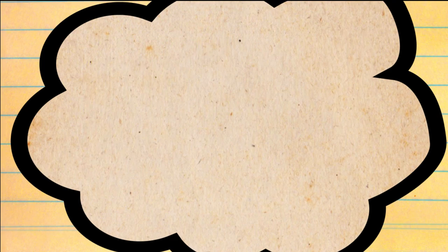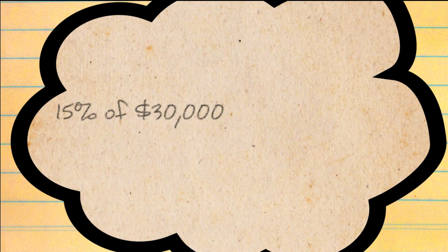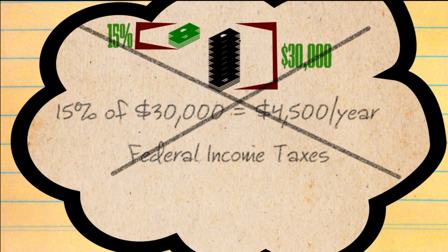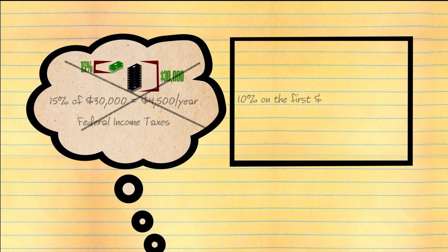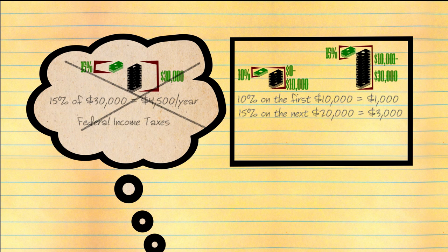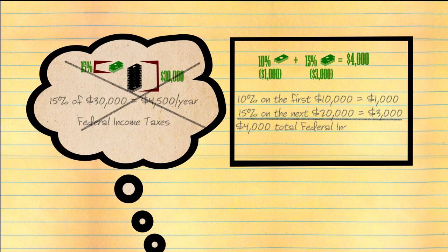John thought he was paying 15% of $30,000, or $4,500 every year in federal income taxes. However, he was really only paying 10% on the first $10,000, which is $1,000, and 15% on the next $20,000, which is $3,000, giving him a total of $4,000 in federal income taxes.